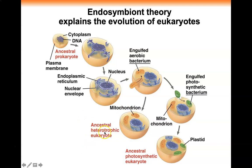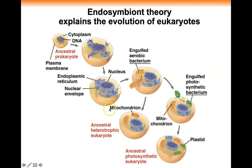Mitochondria arose from engulfment of a bacterium that does aerobic cellular respiration, giving rise to the ancestral heterotrophic eukaryote. Trophic means feeding. Hetero refers to organic compounds, so heterotrophic is basically the same as chemoheterotrophic. This ancestral heterotrophic eukaryote takes organic carbon compounds, brings them in, and does aerobic cellular respiration to make ATP.